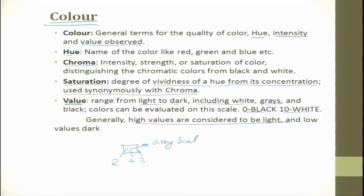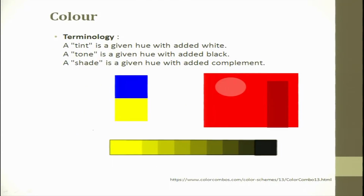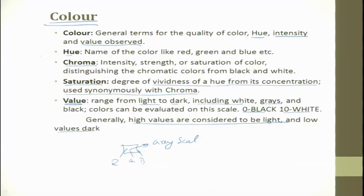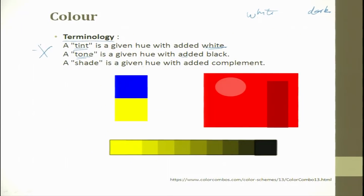Generally higher values are considered to be light and lower values are considered to be dark. Terminologies to understand more in color: tint — a tint is a given hue with added white color. A tone is a hue given with added dark. A shade is a given hue with added complements. Tint is hue moving towards white, tone is hue moving towards dark, and shade is going towards the added complement.